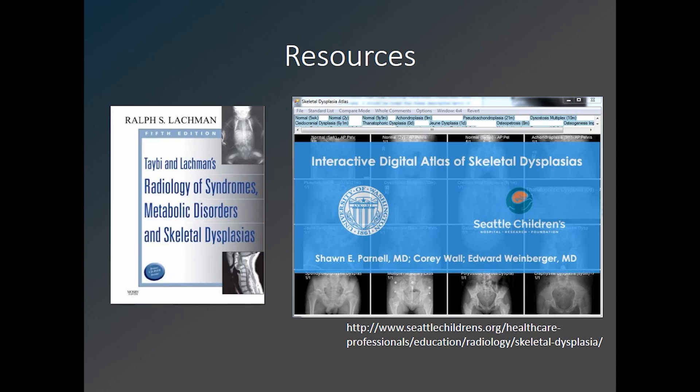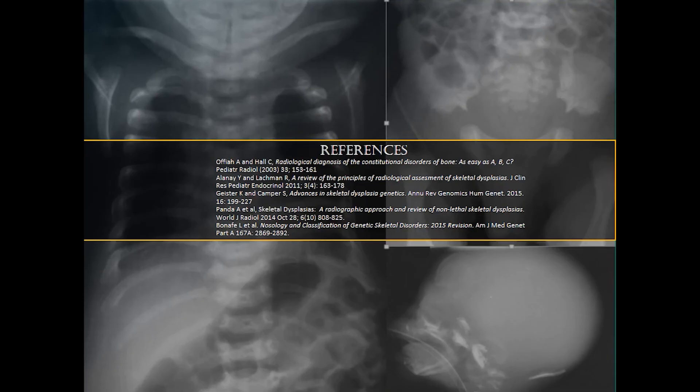Here are two helpful resources when you are reading a skeletal dysplasia case. The first is Taybi and Lachman's classic textbook on the radiology of syndromes and skeletal dysplasias. And here on the right is a link to a very helpful digital atlas available for free from the pediatric radiologists at Seattle Children's Hospital. It includes different age patients with some of the more common skeletal dysplasias, and also includes normal x-rays of patients of similar ages for comparison. Thanks for listening, and I hope you now have a better basic understanding of the approach to a skeletal dysplasia.